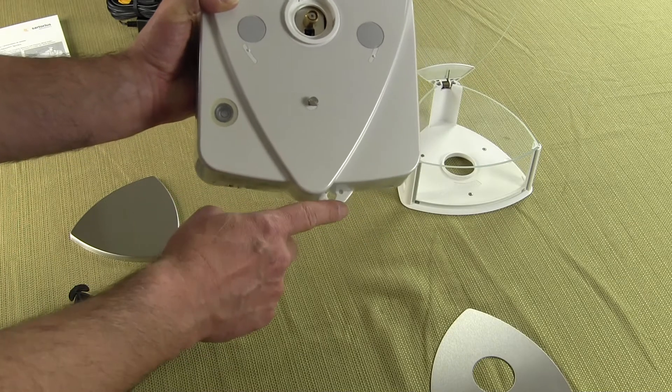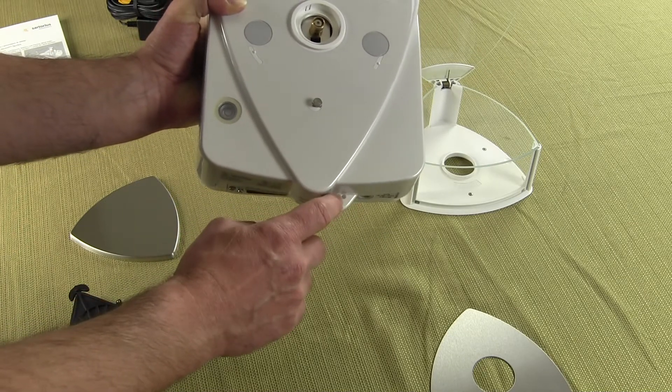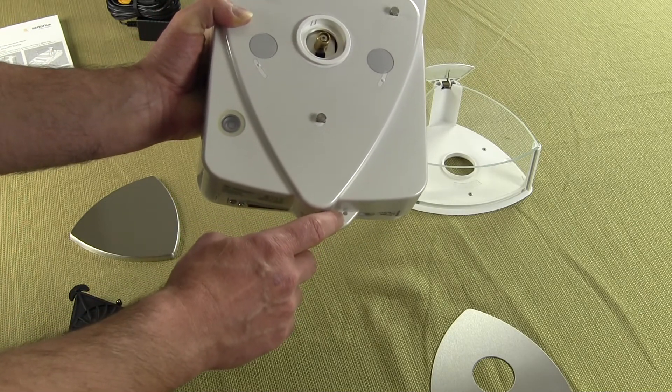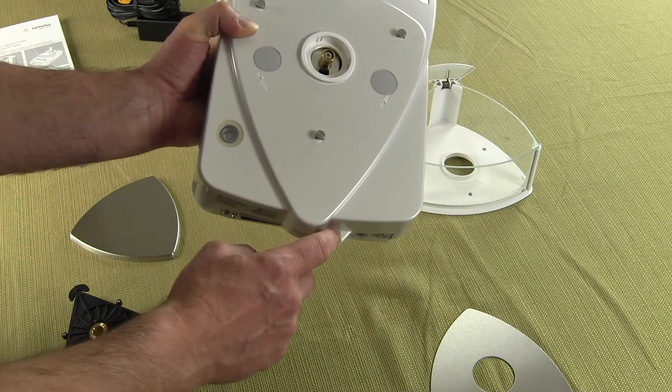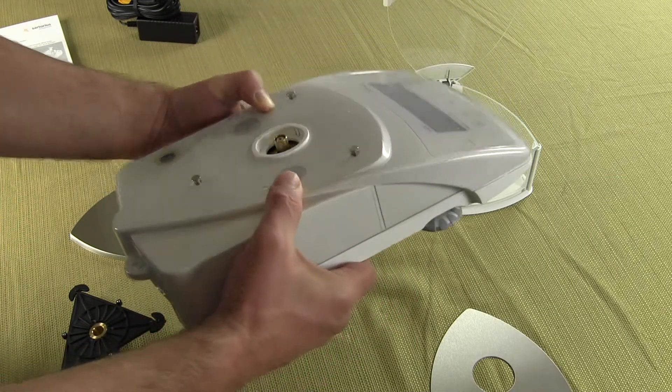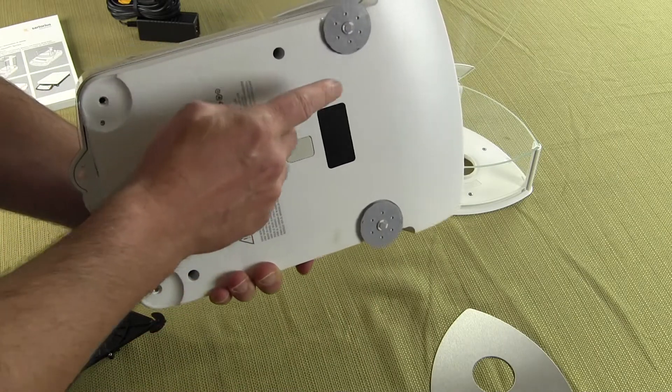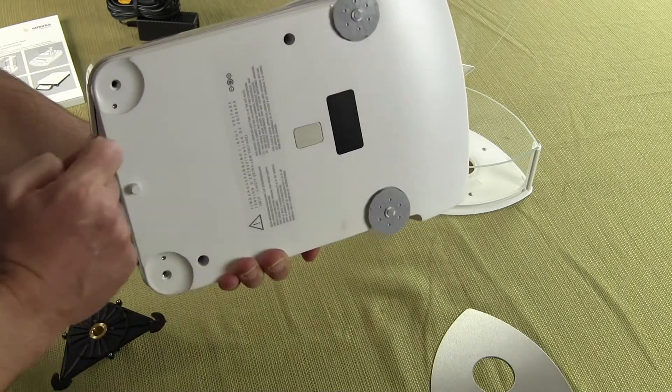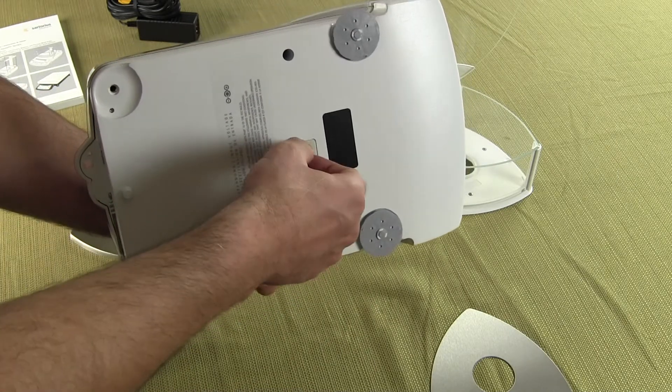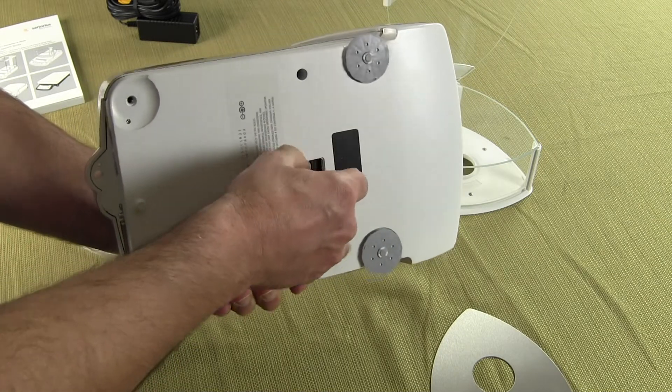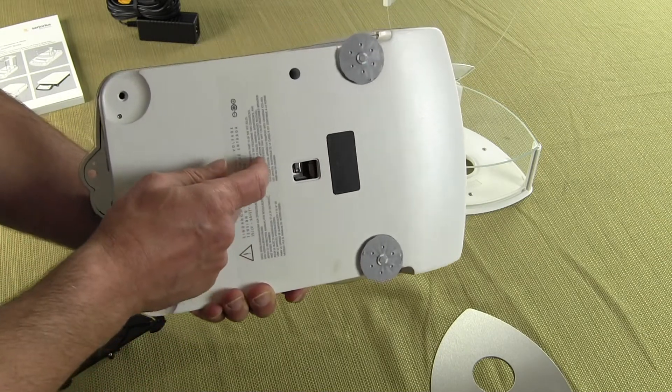On the back here, this i-loop, this would be for putting a cable through the balance if you wanted to lock it down on your bench. On the bottom of the balance we have two adjustable feet and this port right here in the center, this is for an underhook.